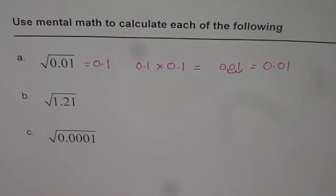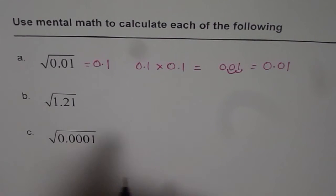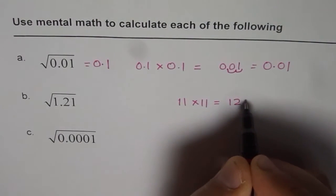That is how you can find the square root of 0.01. Now we have 1.21. We know 11 times 11, that is 11 squared is 121.